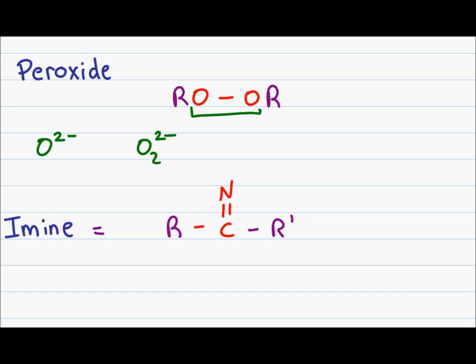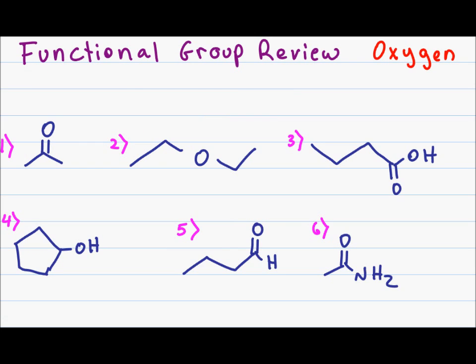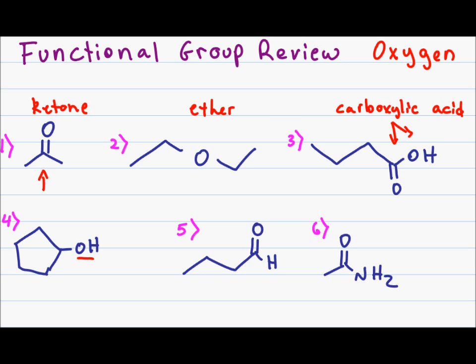Over the next few videos, I will be discussing how to name organic molecules, including how to name all the functional groups from today. Since oxygen shows up in many functional groups, let's see if we can identify what class of molecule each oxygen belongs to. For problem one, we have a carbonyl group in the middle of a molecule — this has to be a ketone. For problem two, we have an oxygen directly bound to two R groups — this has to be an ether. In problem three, we recognize a carbonyl and an OH group — whenever you see those two connected, that has to be a carboxylic acid. In problem four, we have a hydroxyl group on an R group — this has to be an alcohol. Problem five: we have a carbonyl with a hydrogen, a terminal carbonyl with nothing on it — this has to be an aldehyde.